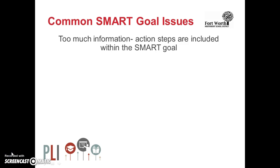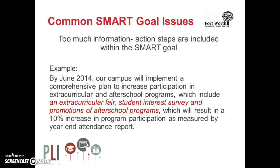This example has way too much information. In fact, this goal tells you exactly how they plan on accomplishing the goal. The example reads: 'By June 2014, our campus will implement a comprehensive plan to increase participation in extracurricular and after-school programs, which include an extracurricular fare, student interest survey, and promotions of after-school programs as measured by interviewer attendance report.' In order to make this an effective SMART goal, you would remove the following pieces: extracurricular fare, student interest survey, and promotions of after-school programs.